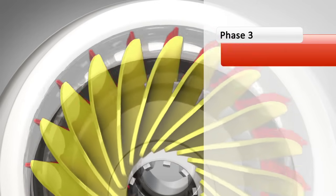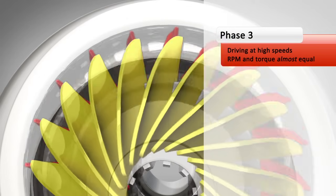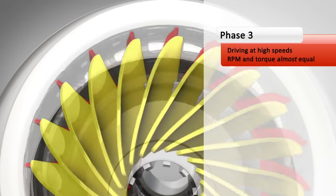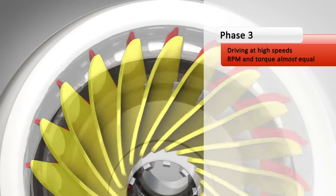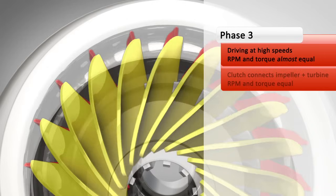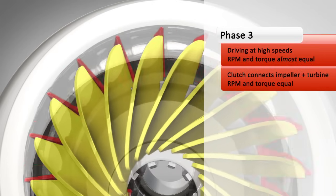The third phase is called coupling. The vehicle moves fast. The turbine has reached approximately 90% of the speed of the impeller, and the torque multiplication has ceased. Now, the torque converter is a simple fluid coupling. Modern vehicles use at this stage of operation a lockup clutch to lock the turbine to the impeller. This eliminates losses associated with fluid drive.